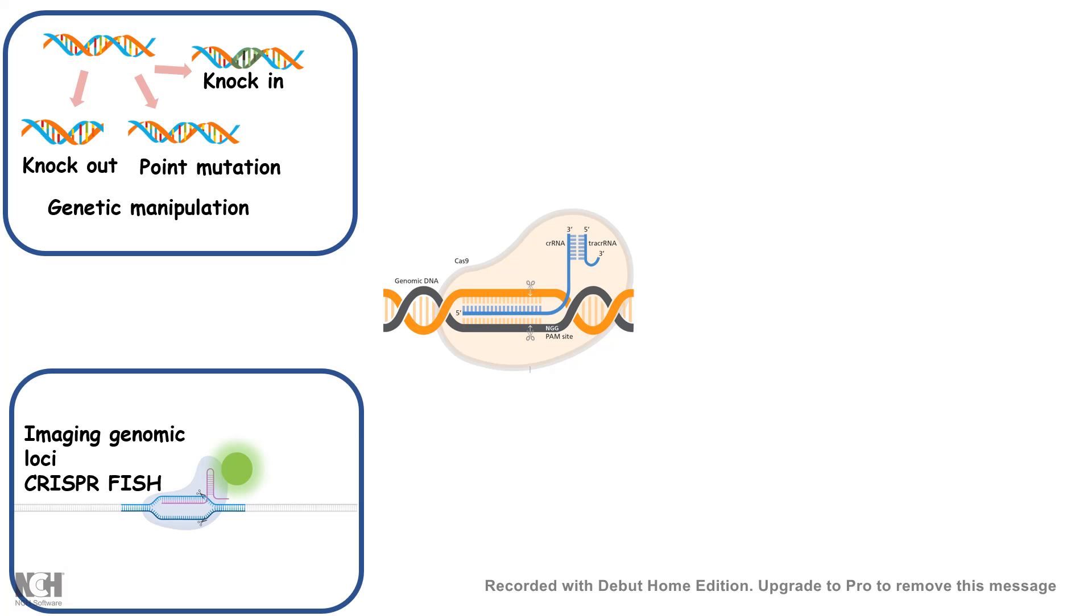CRISPR can be used to label genomic locus. There is an emerging field known as CRISPR-FISH or CRISPR-mediated fluorescence in situ hybridization. You can understand that CRISPR is a targeting mechanism by which we can target a specific genomic locus, and if instead of cutting it you can tag it with a fluorophore, then we can identify that.